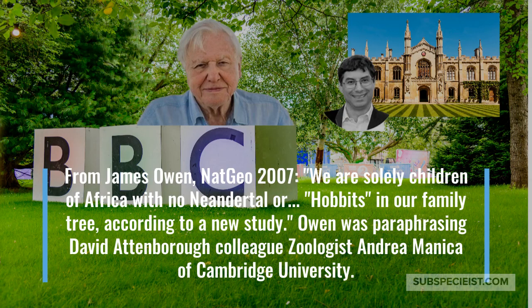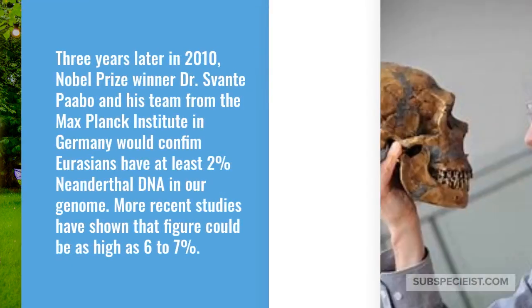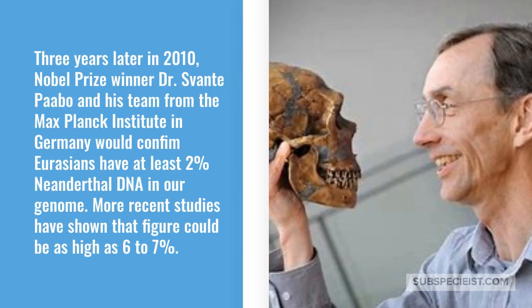From James Owen, National Geographic, 2006: quote, 'We are solely children of Africa with no Neanderthal or hobbits in our family tree, according to a new study.' End quote. Owen was paraphrasing David Attenborough's colleague, zoologist Andrea Manica of Cambridge University. Three years later in 2010, Nobel Prize winner Dr. Svante Pääbo and his team from the Max Planck Institute in Germany would confirm Eurasians have at least 2% Neanderthal DNA. More recent studies have shown that figure could be as high as 6–7%.